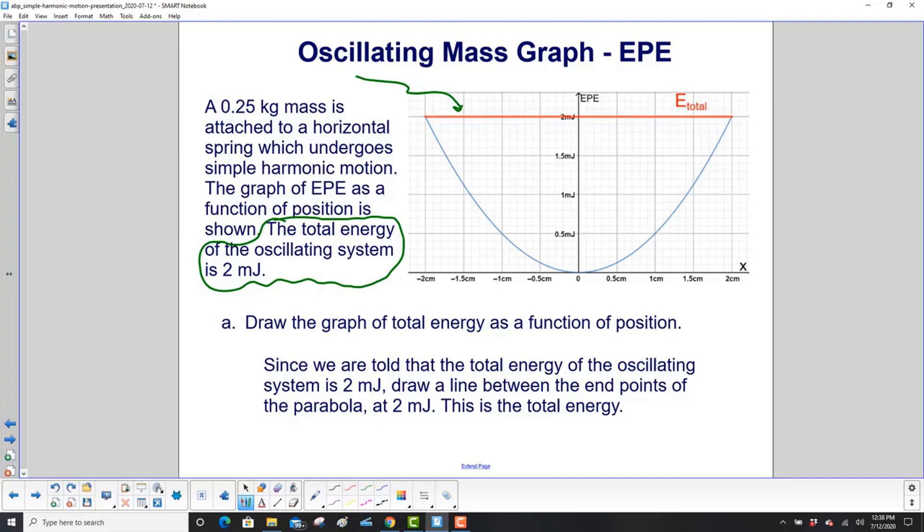We don't go all the way to the end or all the way to the right of the graph. We have to stop here, 2 centimeters and minus 2 centimeters, because that's as much as this mass will be oscillating between.